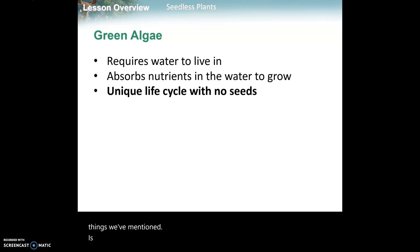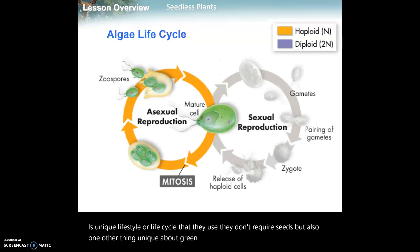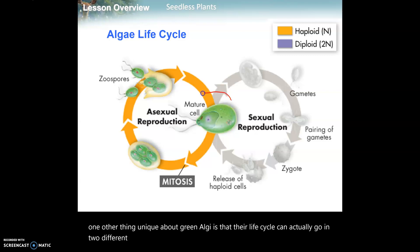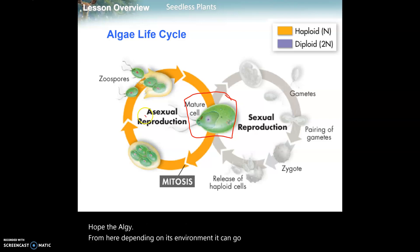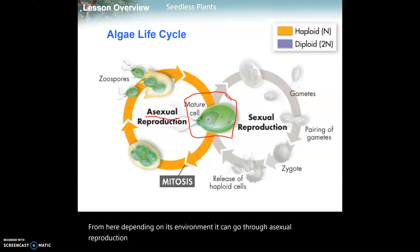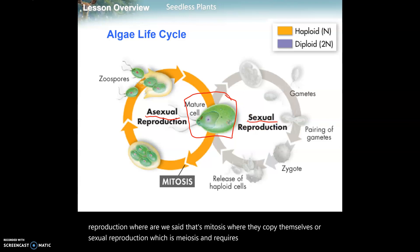The last thing about green algae is its unique life cycle. They don't require seeds, and one other unique thing about green algae is that their life cycle can go in two different directions. Here's the mature cell of the algae - from here, depending on its environment, it can go through asexual reproduction, which is mitosis where they copy themselves, or sexual reproduction, which is meiosis and requires male and female sex cells.